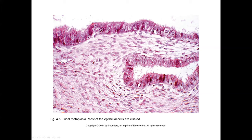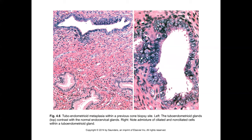Here's a combination of tubal and endometrioid-type change, where you'll get some ciliated cells and other areas without cilia that just look more endometrioid, without the typical endocervical-type epithelium.